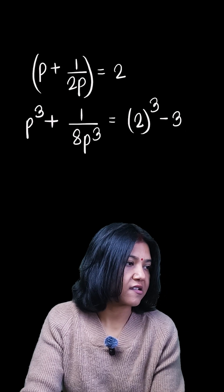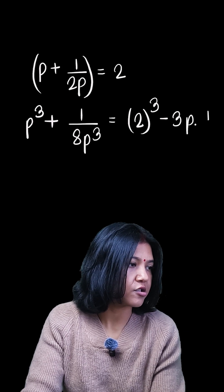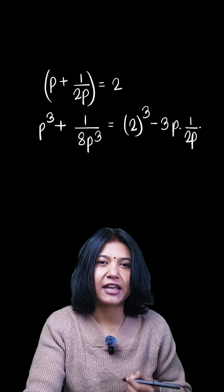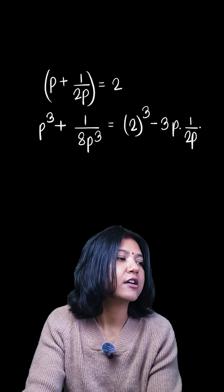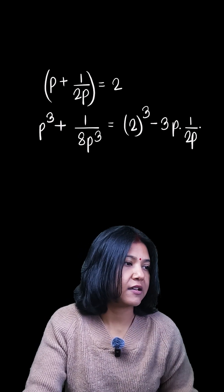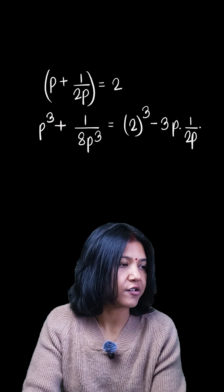Out here, the product is simply p × 1/(2p) × the sum. The formula is 3ab times (a+b). I know the value of a+b here is 2.